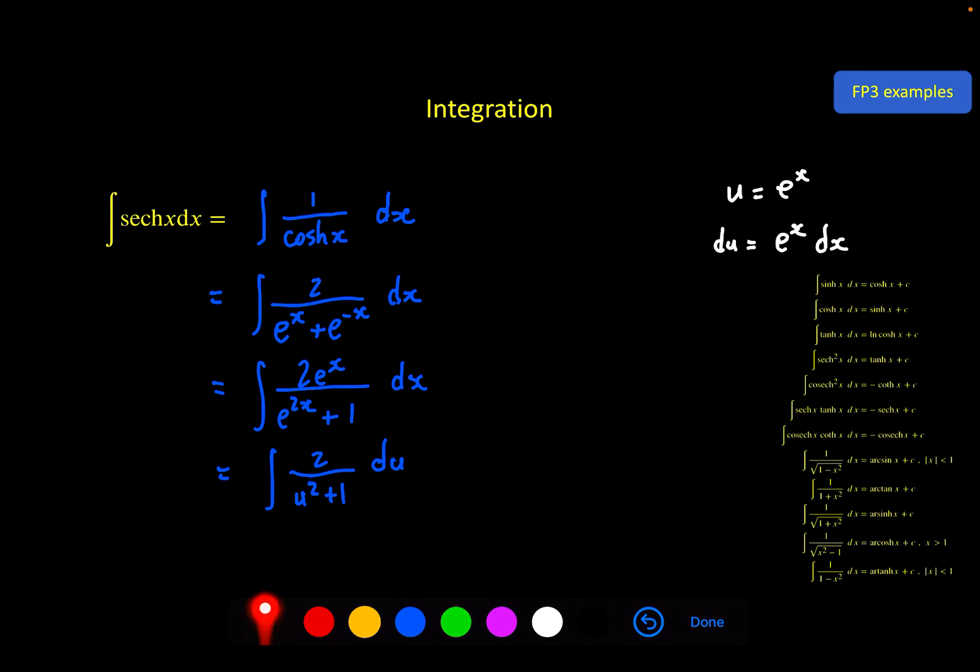All of that work to get something that still doesn't look very nice, but is one of our standard integrals, or very close to it. 1 over x squared plus 1 is here. This is arctan. And I've got a 2 instead of a 1, but I can just put 2 arctan. So this is equal to 2 arctan u plus c. But obviously I shouldn't leave that in terms of u. Reverse our substitution here. u is e to the x. So that becomes 2 arctan e to the x plus c.